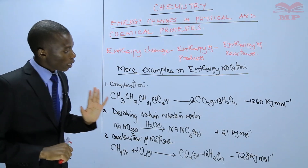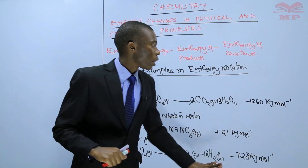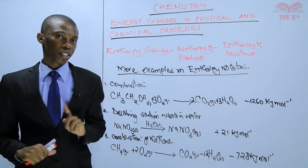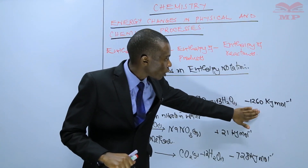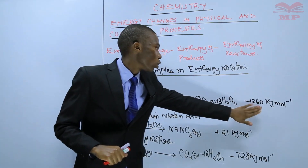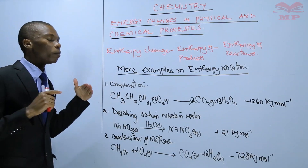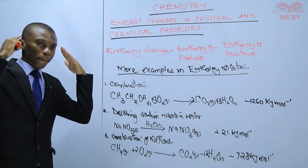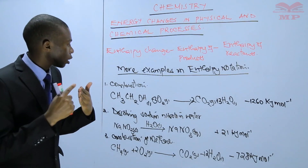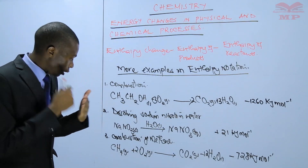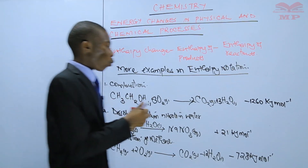These enthalpy changes are molar enthalpy changes, meaning negative 1260 kilojoules per mole is realized when you burn one mole of ethanol in oxygen. One mole of ethanol is the amount corresponding to its molar mass.